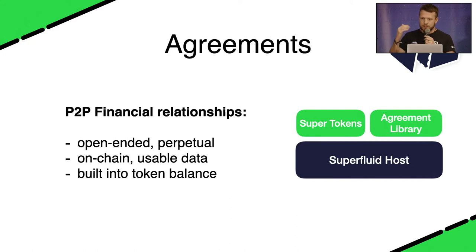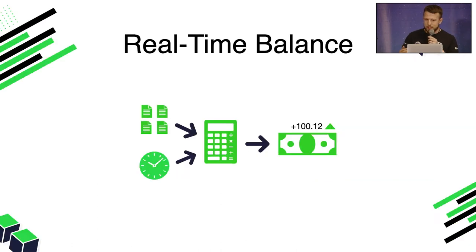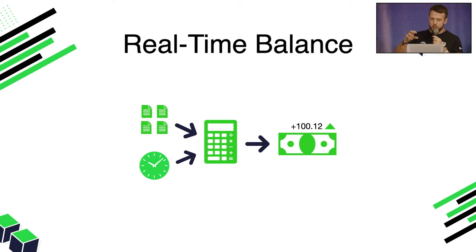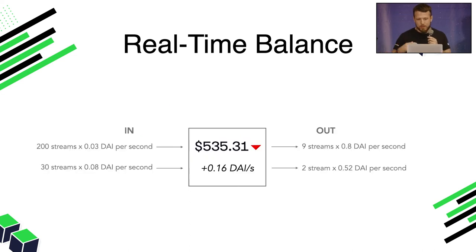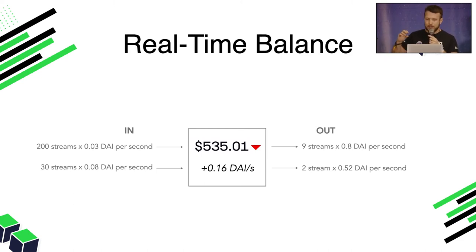What this means is that the balance a user has is updated in real-time. A user's balance becomes a real-time balance where all the information stored on the blockchain is computed with the current timestamp to give you your current balance, and that will change every second. So imagine you're a business — you have hundreds of incoming subscriptions, you're paying your employees, and all of this is updated in real-time in your balance. The number you get there is exactly how much you can spend. Effectively, it's a real-time balance sheet.